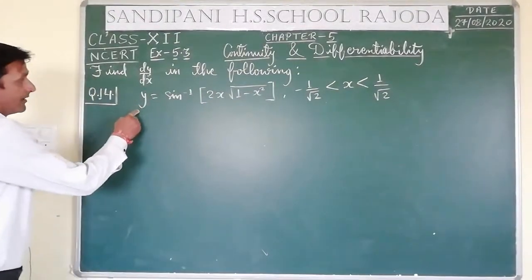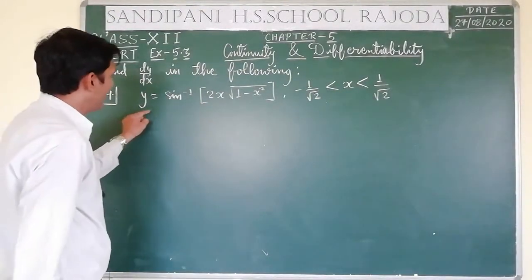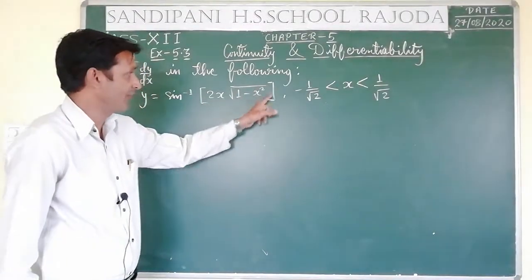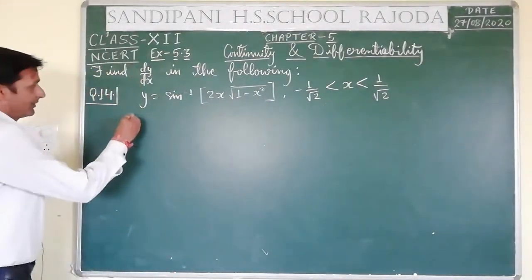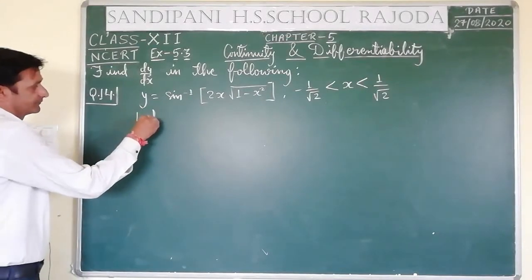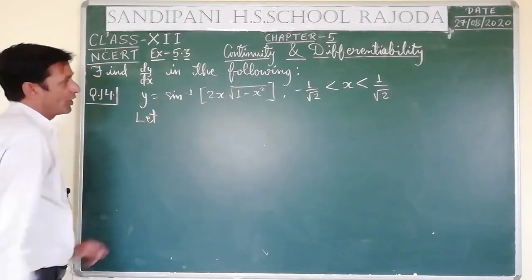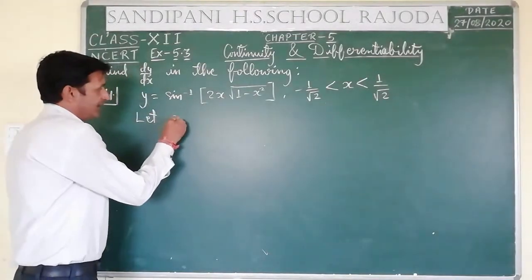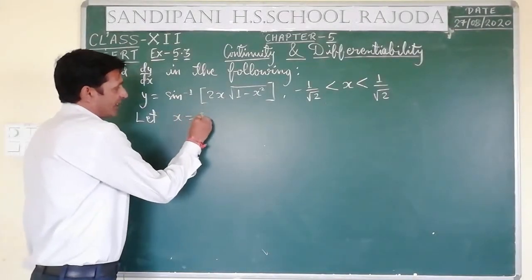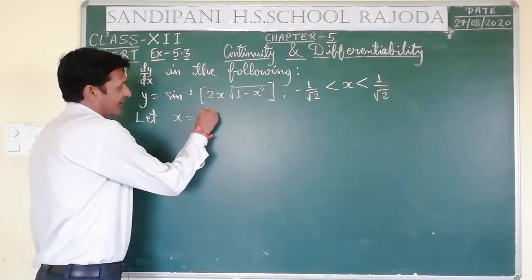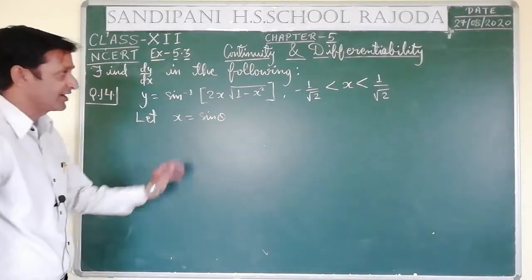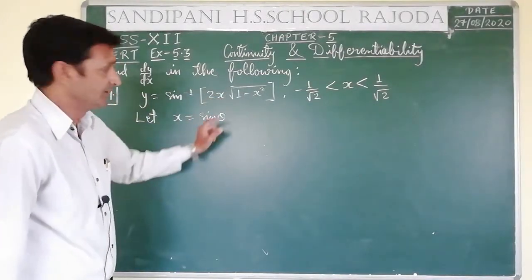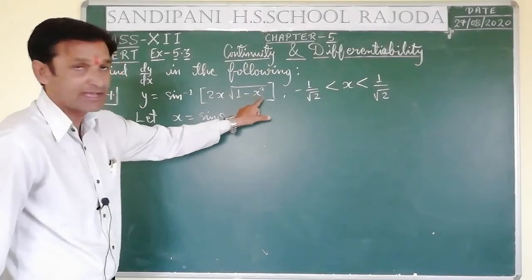The question given is y = sin⁻¹(2x√(1 - x²)). We consider x = sin θ. So we have 2 sin θ, and here we consider √(1 - sin²θ).